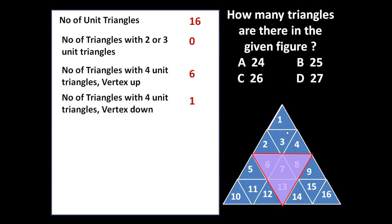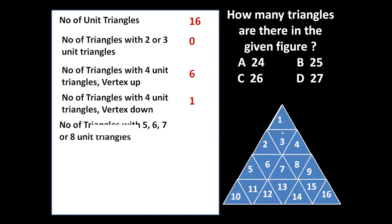After four unit triangles, can we form a triangle with five, six, seven, or eight unit triangles? If we take any five triangles together we cannot form a triangle; with six, no; with seven, no; with eight small triangles we cannot form a triangle. So the number of triangles with five, six, seven, or eight unit triangles taken together is zero.